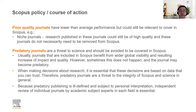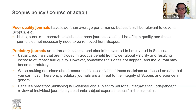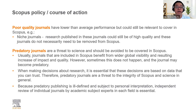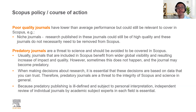Journals included in Scopus benefit from wider global visibility and the resulting increase in impact and quality. Sometimes this doesn't happen and the journal may become predatory. When making decisions about research, you need to base these decisions on data you can trust. Predatory journals are a threat to the integrity of Scopus and science in general, and because predatory journal publishing is ill-defined and subject to personal interpretation, independent reviews of individual journals by academic subject experts in each field is essential.